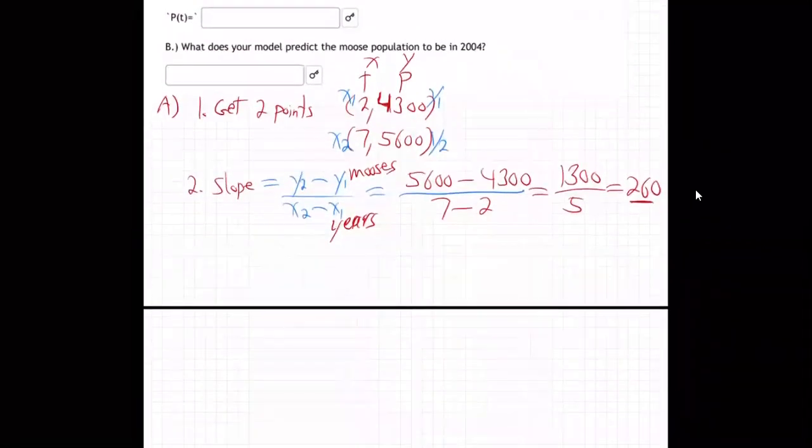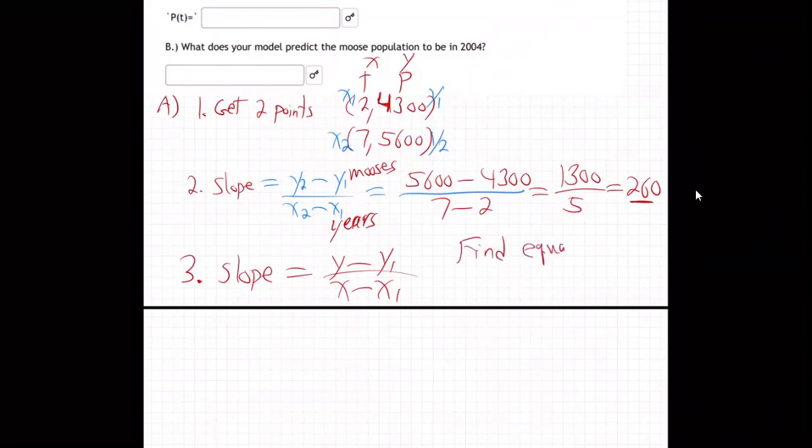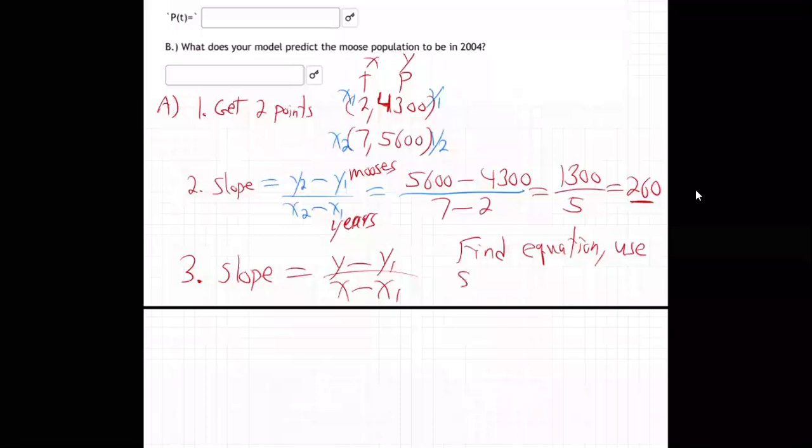Maybe moose is its own plural. Is that what it is? All right. Number three. Slope again. This time, plane Y, plane X, right? To find equation, use slope again.